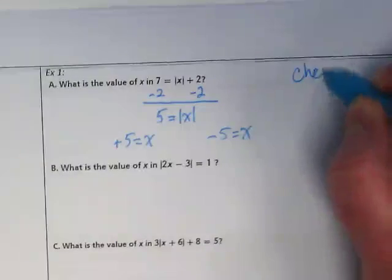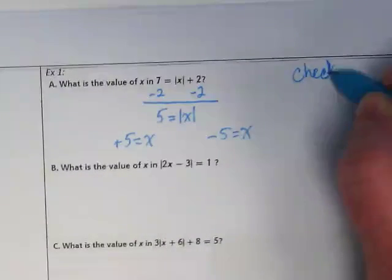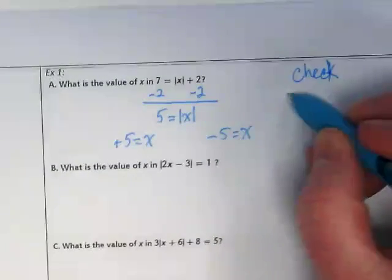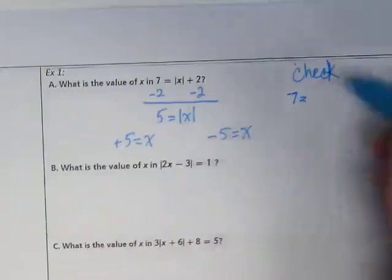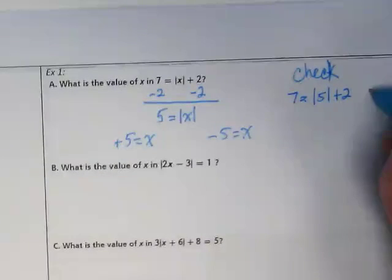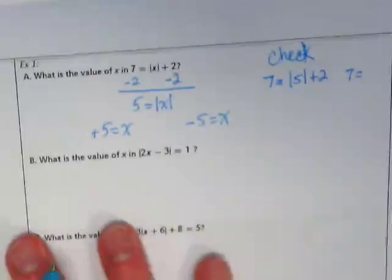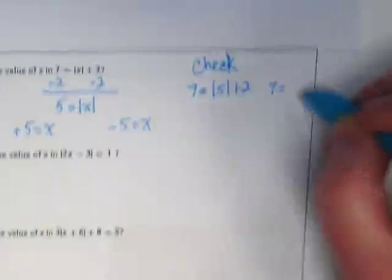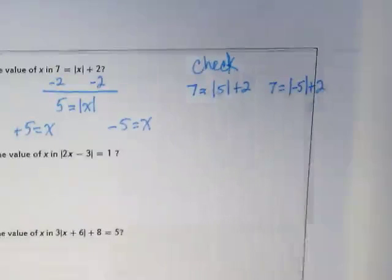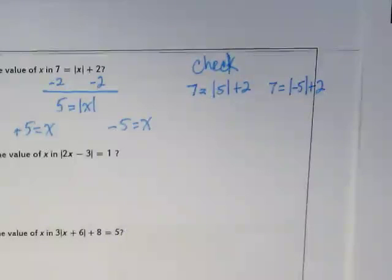So over here, I want us to write our check. We're going to go back to the original and say 7 is equal to 5, the absolute value of 5 plus 2. And 7 is equal to the absolute value of negative 5 plus 2. And we're going to check those and see if they work.